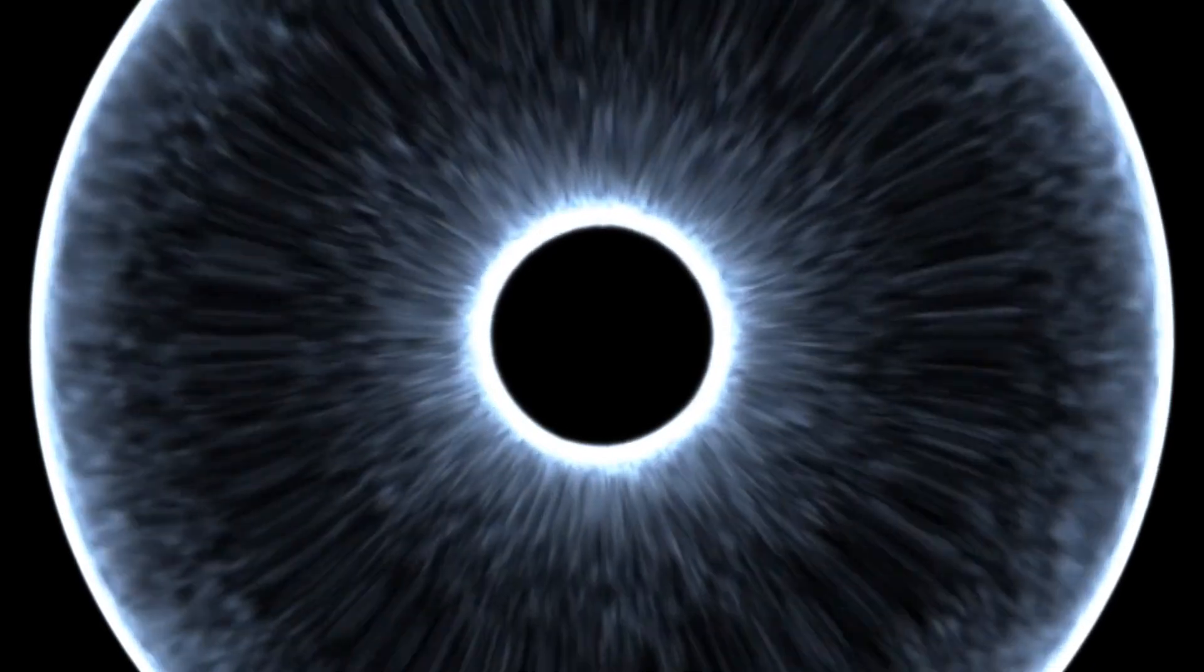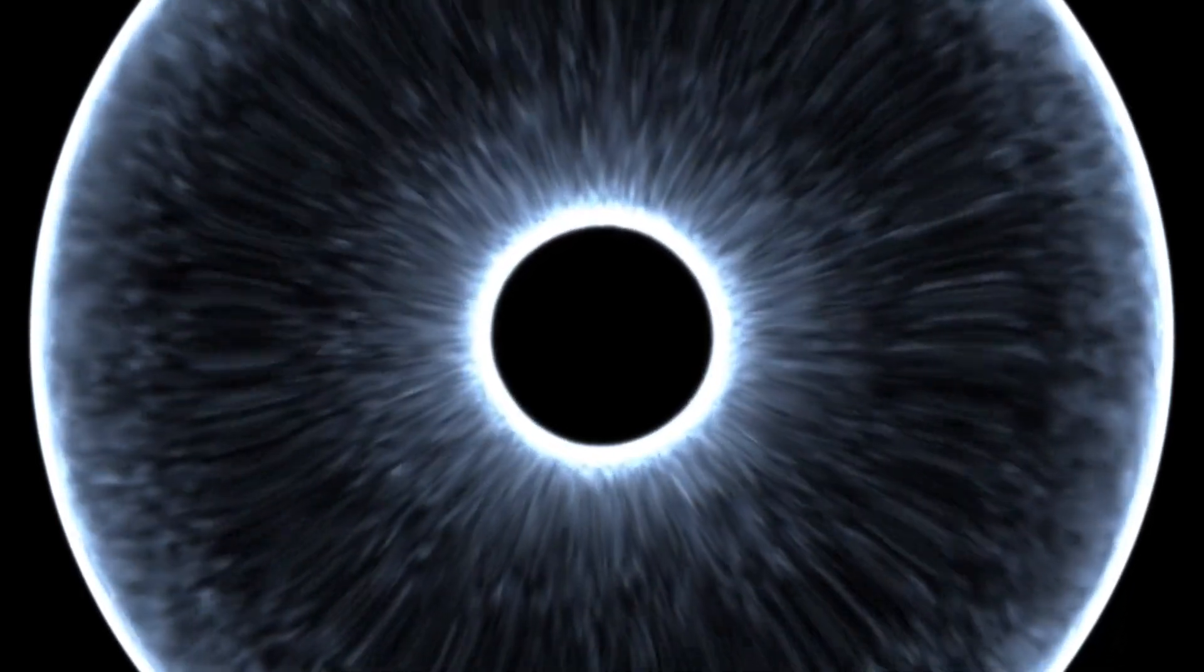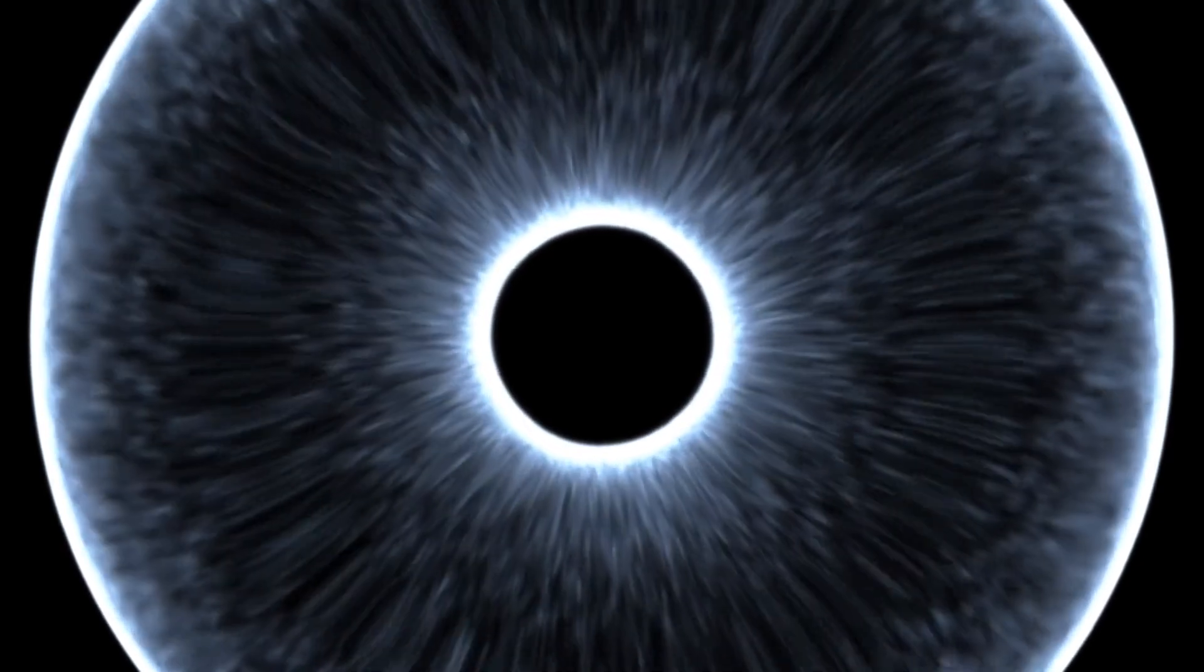Black holes come in various sizes, including stellar black holes and supermassive black holes. Stellar black holes, which may have a mass just a few times that of our sun, are created from the remnants of massive stars that have consumed all their nuclear fuel.